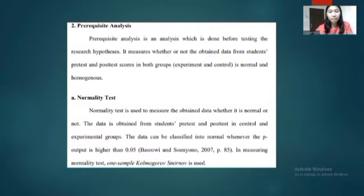Normality test is used to measure the obtained data whether it is normal or not. The data is obtained from students' pretest and posttest in control and experimental groups. The data can be classified into normal whenever the p-output is higher than 0.05. In measuring normality test, one sample Kolmogorov-Smirnov is used.